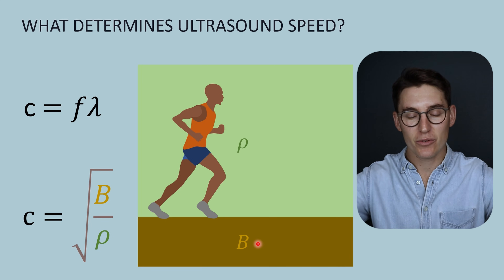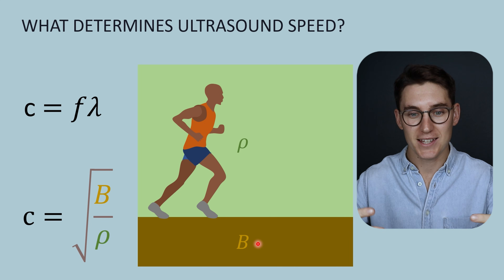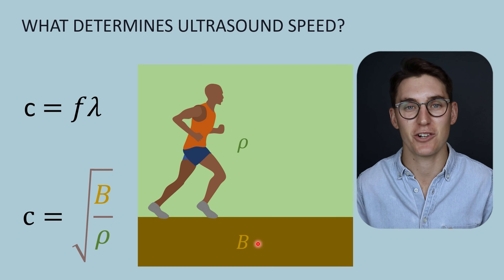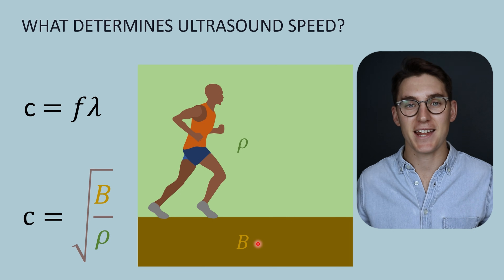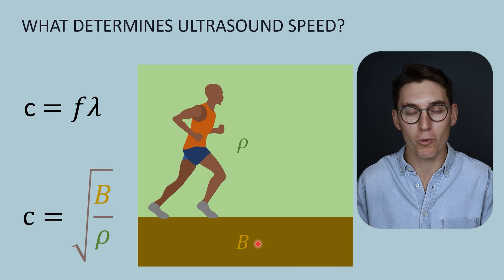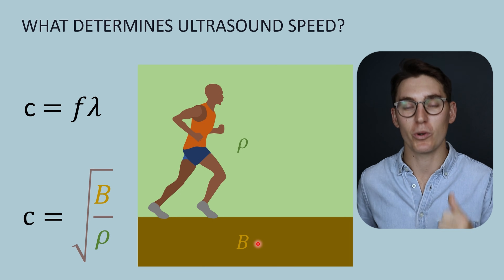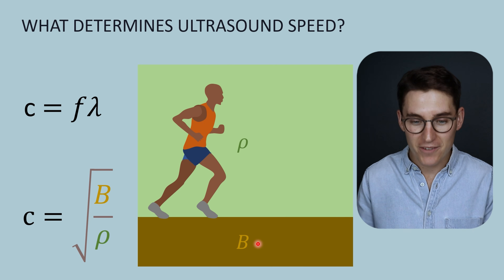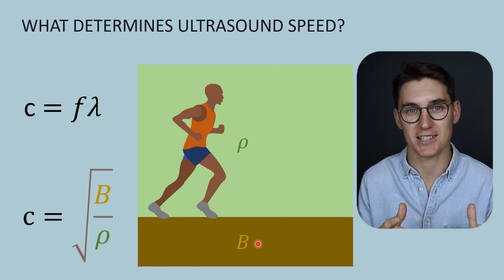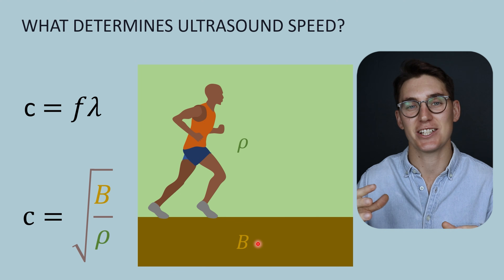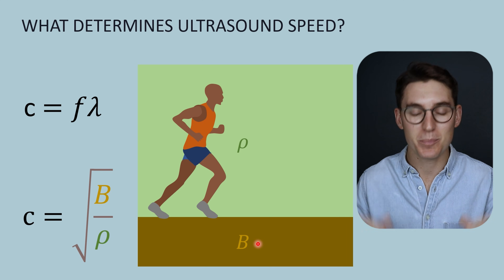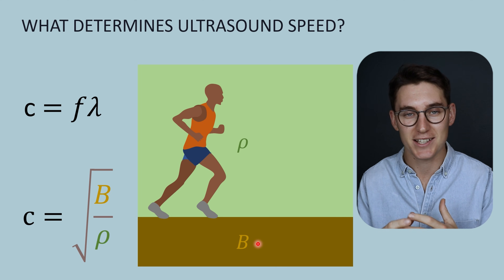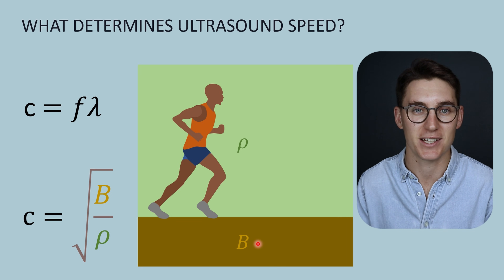When we think of density, think of the air the runner is running through. The thinner the air, the lower the density, the faster the runner will run. If that air were replaced with syrup — a much thicker, more dense material — the runner would run much more slowly. With frequency the same, the stride length or wavelength would decrease drastically. As density increases and the air gets thicker, the speed of the runner slows — and the same happens with sound: as tissue density increases, the speed of sound decreases.